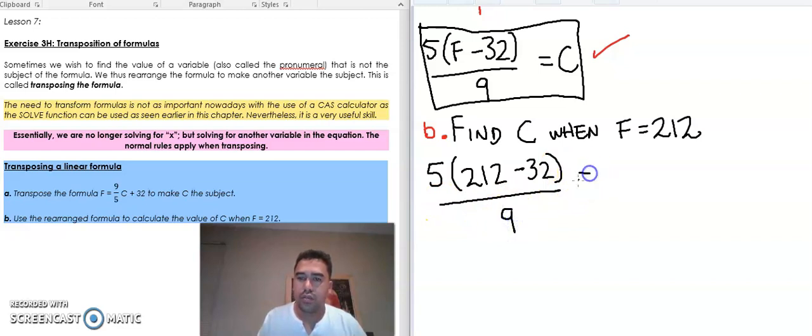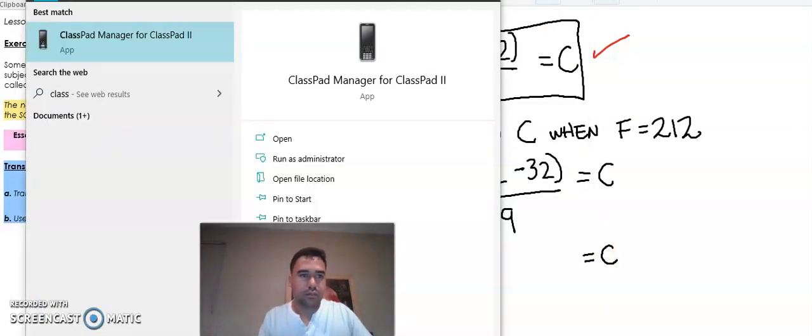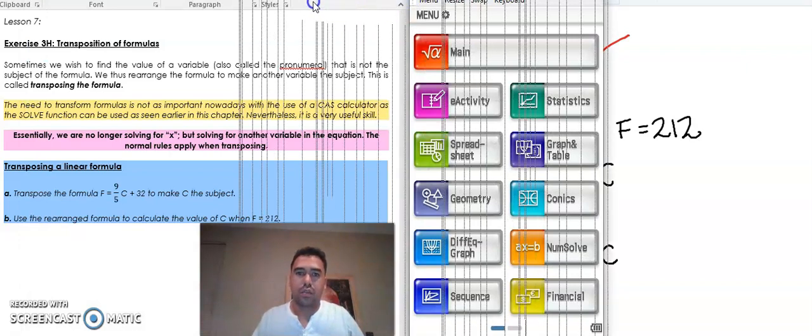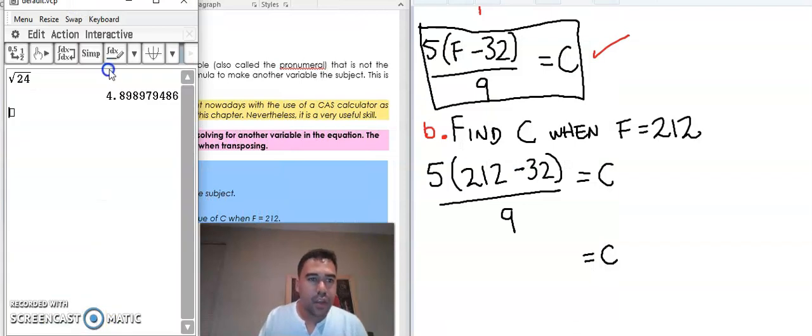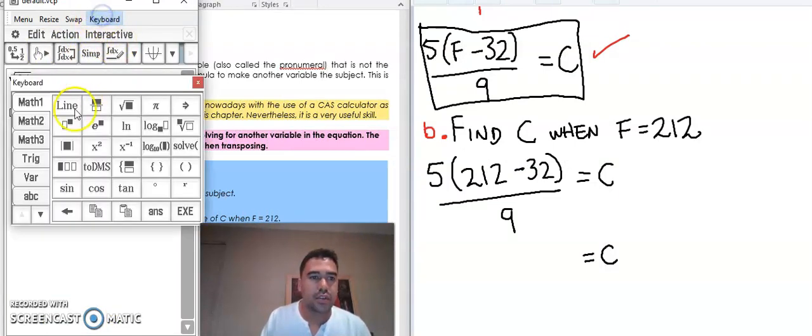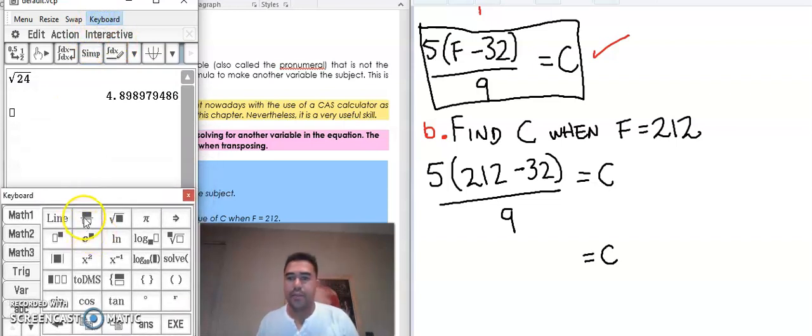So let's just plug this in: 5 times, 212 take away 32, over 9 equals C. As you can see, this whole left hand side has no more letters in it, it's all numbers, meaning it is an answer that we can work out. So what we'll do here is input this into calculator to get the C. So 5 multiplied by 212 take away 32, all over 9.